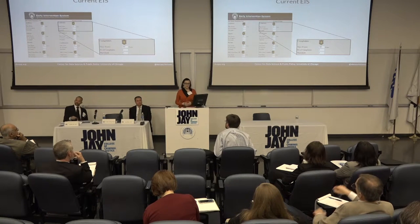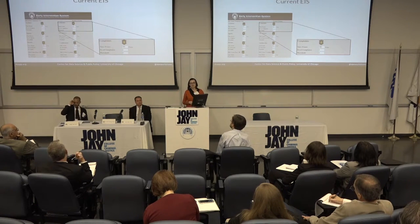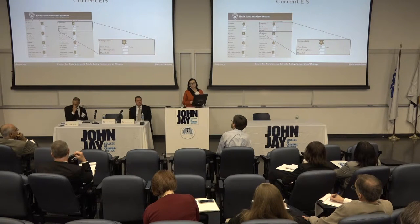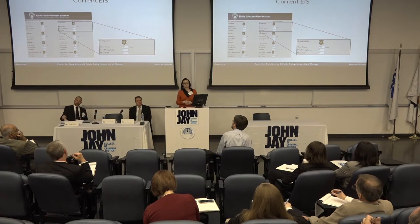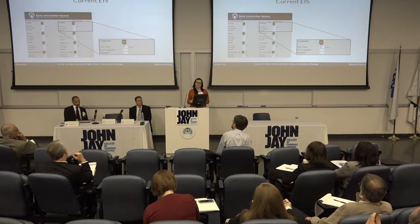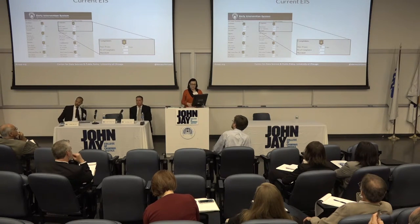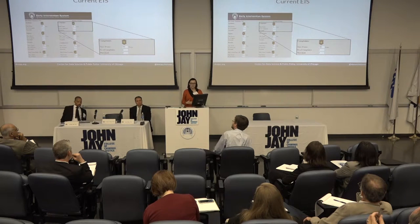CMPD already had an early intervention system, as many agencies do, and it was based on a series of about 10 thresholds that encapsulate officer intuition of what might be predictive of signs of trouble. These are things like having a certain number of complaints in 180 days. There's some smart stuff in here — if an officer has had a lot of pursuits recently or there's been a lot of injuries, that makes sense as potentially predictive of future problems.